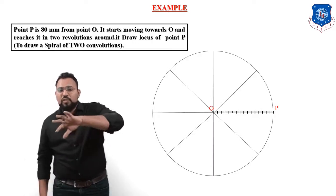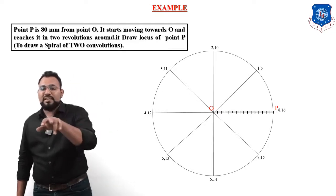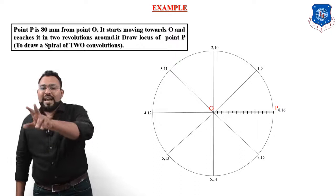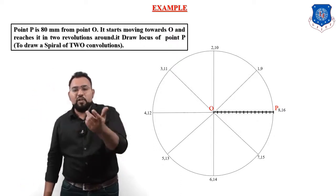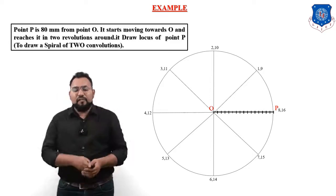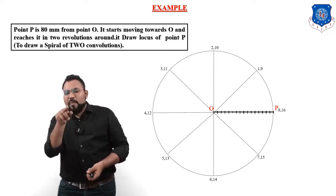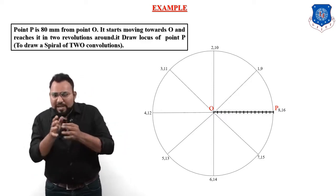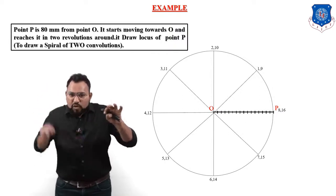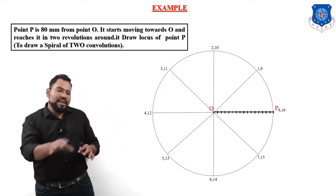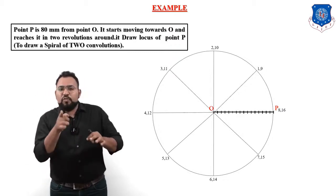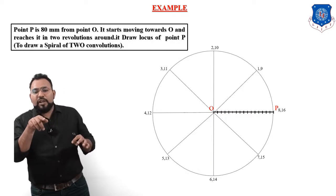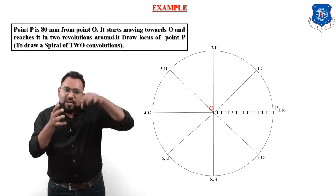We use an overlapping numbering method. First, give numbering in the anticlockwise direction: one, two, three, four, five, six, seven, and eight. Then overlap: on division one write 1,9; on division two write 2,10; on division three write 3,11; on division four write 4,12; five write 5,13; six write 6,14; seven write 7,15; eight write 8,16. This is how the circle is divided into 16 equal parts.